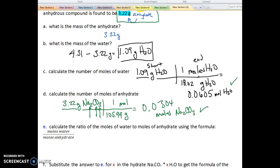Okay, so let's go on to E. So now it says calculate the ratio of the moles of water to the moles of anhydrate using this formula. Okay, so it's just moles of water on top and moles of anhydrate on the bottom, which I just calculated. So the moles of water is right up here. There's my moles of water.